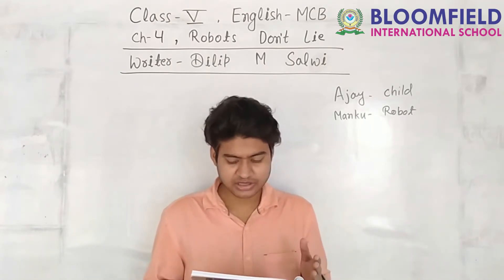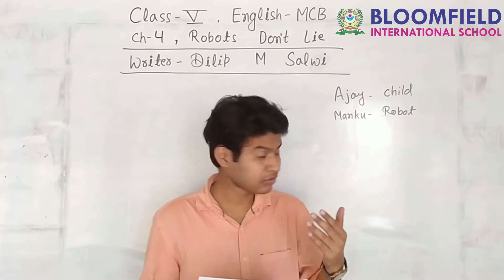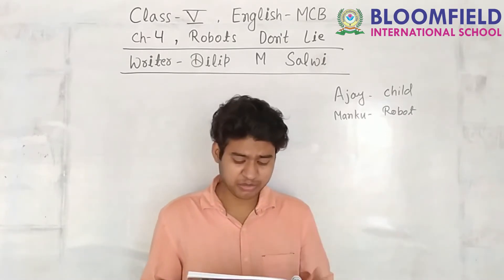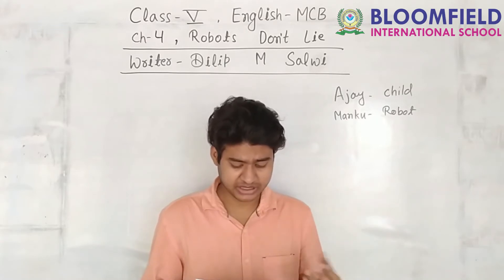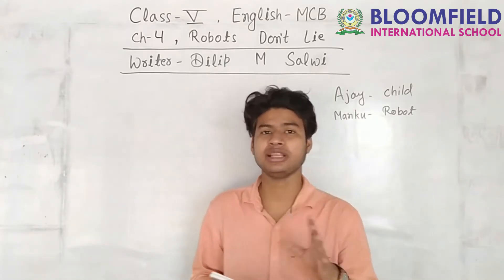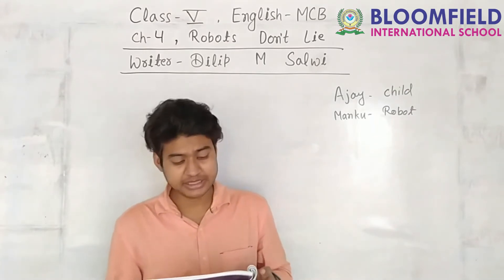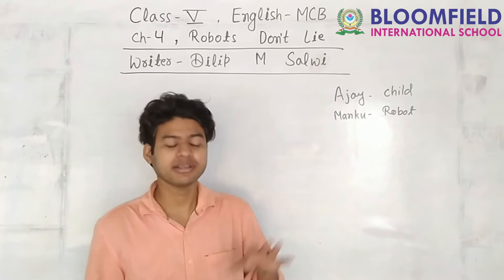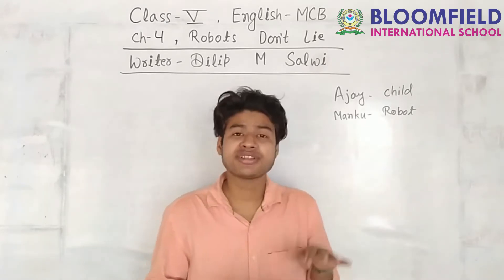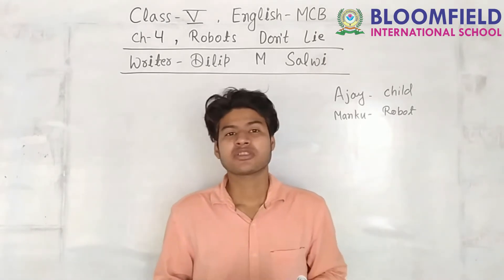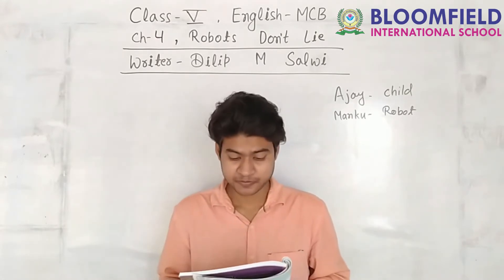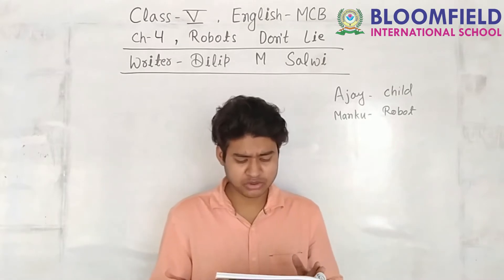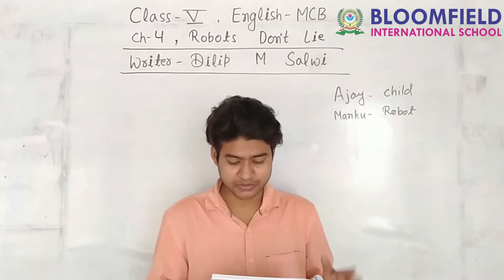In the first scene, Ajay is lying to his father that he has done his homework. But Manku intervenes: 'Correction — you are in error. You are misinforming your father. Your homework has not been done. Error! Error!' Manku is stopping Ajay from lying. Ajay says, 'Oh, do stop it Manku — you don't have to take part in every conversation.'